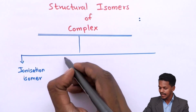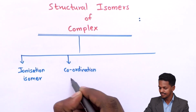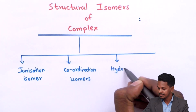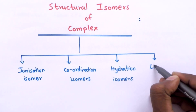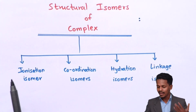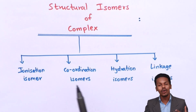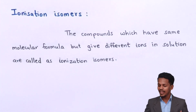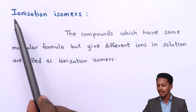The four types of structural isomers are: first, ionization isomer; second, coordination isomer; third, hydration isomer; and fourth, linkage isomer. We are going to talk about each of these isomers with the help of definitions and examples. Let's start with the first one — ionization isomer.